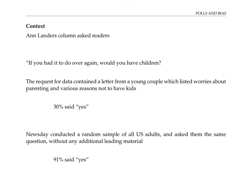Similar to question wording, the context of a question can also influence the answers. One famous example is an Ann Landers column that asked readers, 'If you had to do it over again, would you have children?' The request for data contained a letter from a young couple listing worries about parenting and various reasons not to have kids. This poll suffered from several issues, including that it wasn't a random sample, but more of a voluntary response survey. But in addition, the context of that letter influenced the answers — only 30% said yes, they would have children. However, when Newsday surveyed a random sample of US adults and asked the same question without any additional leading material, a full 91% said yes.